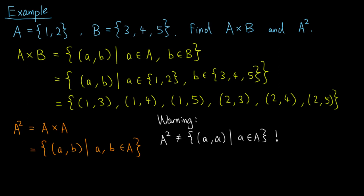Going back, since the set A contains the elements 1 and 2, the ordered pairs of A squared are (1, 1), (1, 2), (2, 1), and (2, 2).